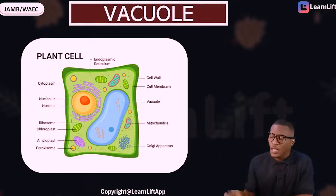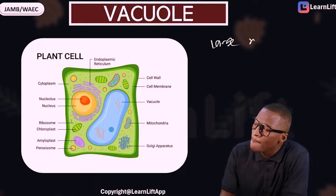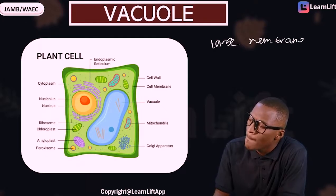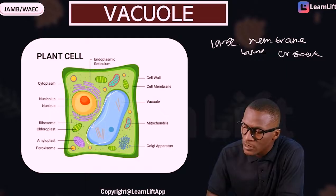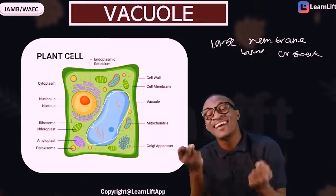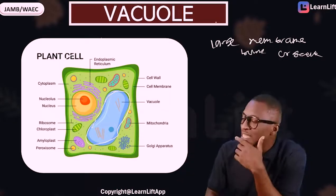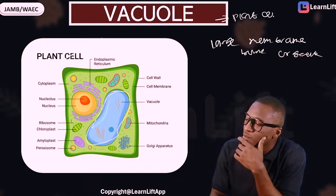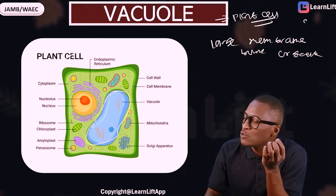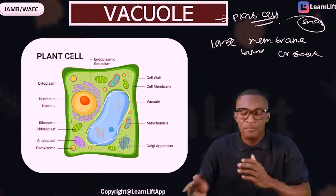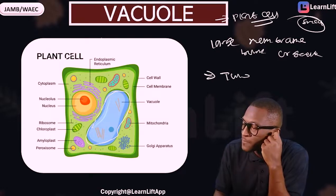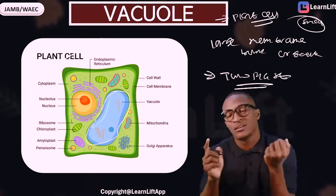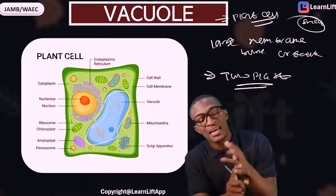Now let's talk about the vacuole. The vacuole is a large membrane-bound organelle. Look at this structure — in plant cells the vacuole is very large. The vacuole is present in plants and is very big. The membrane surrounding the vacuole is called the tonoplast. It is a large membrane-bound organelle, and that membrane is called the tonoplast.